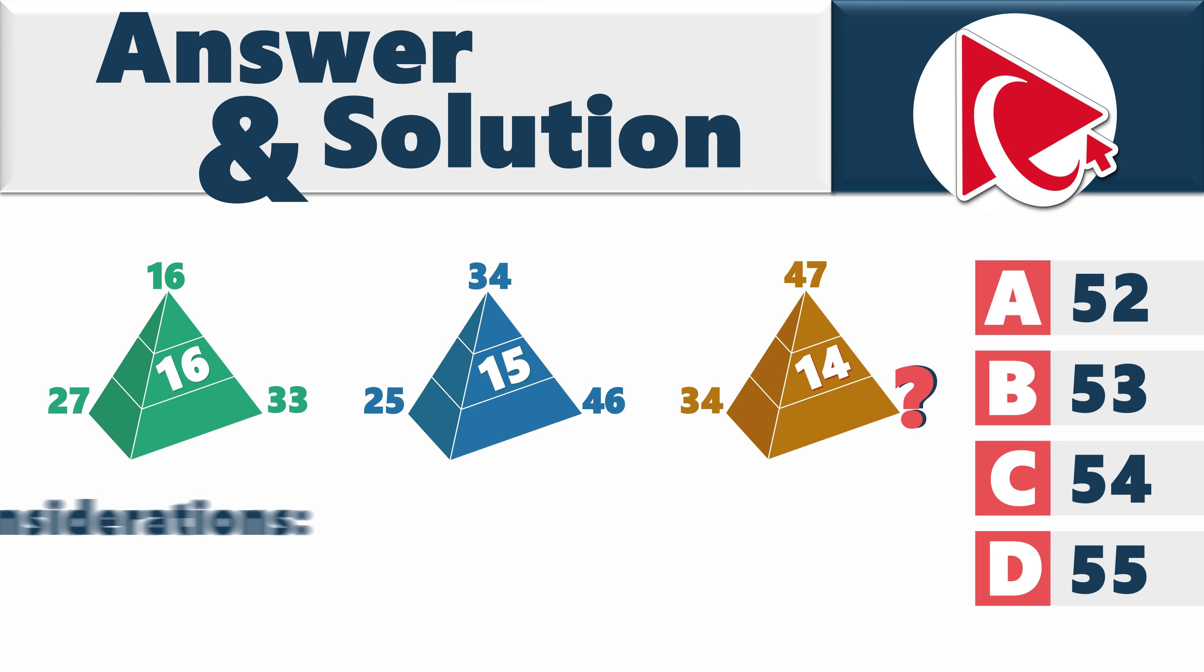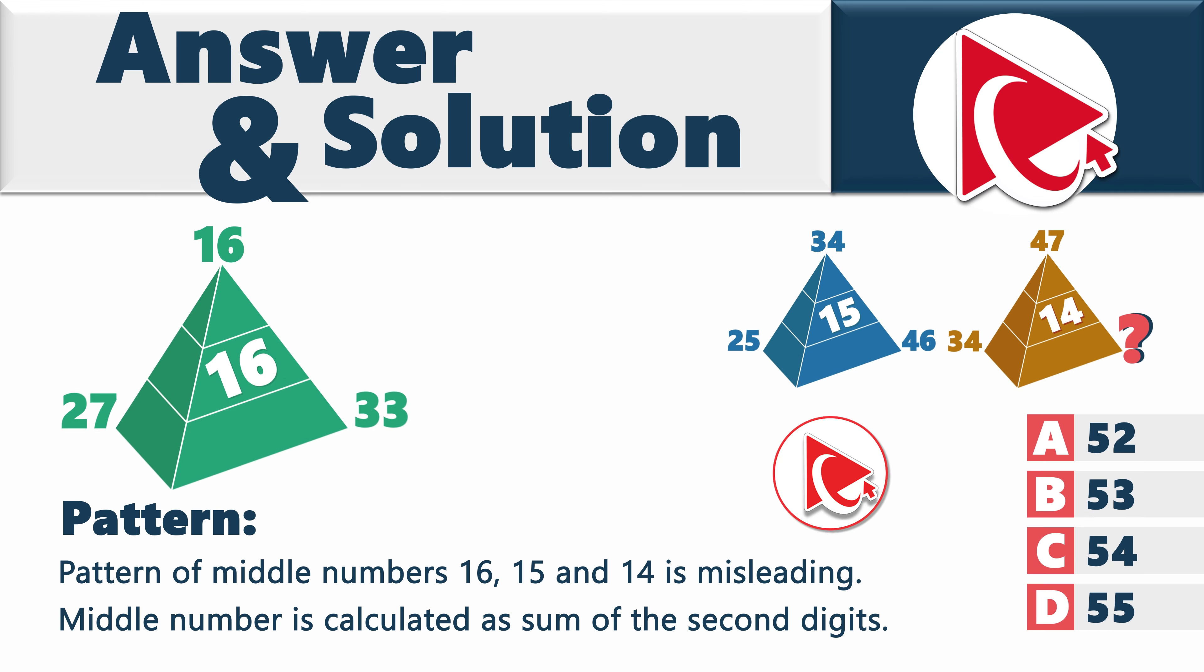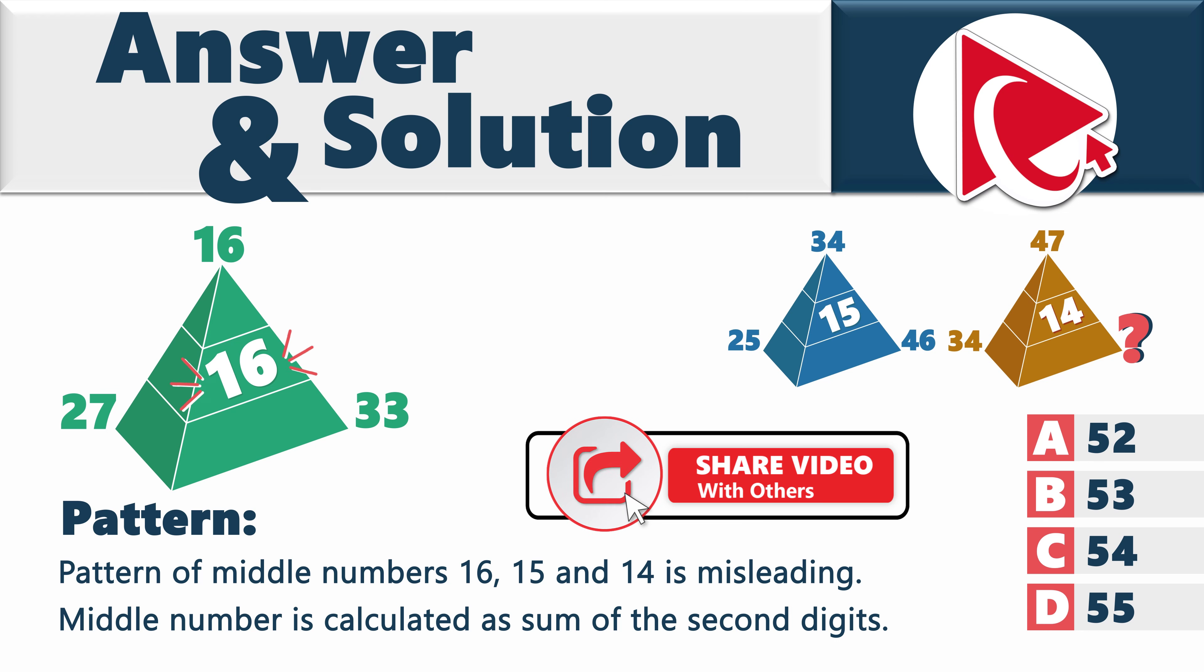Your insights could be the key to unlocking this mystery. And speaking about mysteries, I gotta share the secret with you. Only one digit from the whole number is used in the calculations here. So, for example, in the first pyramid, instead of using numbers 27, 16, and 33 to calculate the middle number 16, only numbers 7, 6, and 3 are used in the calculations. And sum of 7, 6, plus 3 is exactly 16.